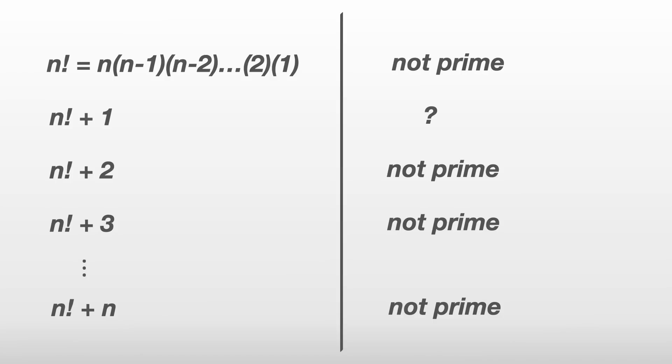So, look, we've found a string of n minus 1 consecutive composite numbers. So, we must be close to finishing this proof. Remember, we wanted n consecutive composite numbers. Well, this next step feels a bit of a trick, but it works.